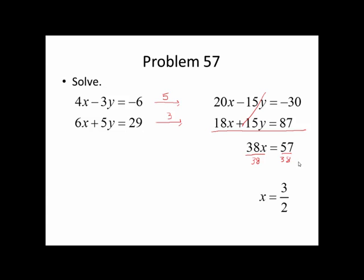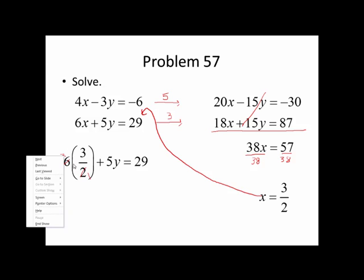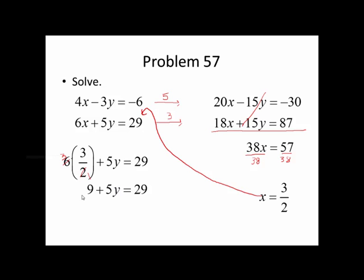Reduce this to lowest terms, and we get 3 halves. Now I need to take this equation back to one of the original equations. I'm going to use the second one here. I'm going to plug that in for x, and I'm going to solve this equation for y. 6 times 3 halves works out to be 9 because 2 goes into 6. 3 times 3 is 9. Subtract 9 from both sides. 5y equals 20, and divide both sides by 5, and we get y equals 4. Now again, we want to write this as an ordered pair: x is 3 halves, comma, y is 4, and there's our solution.